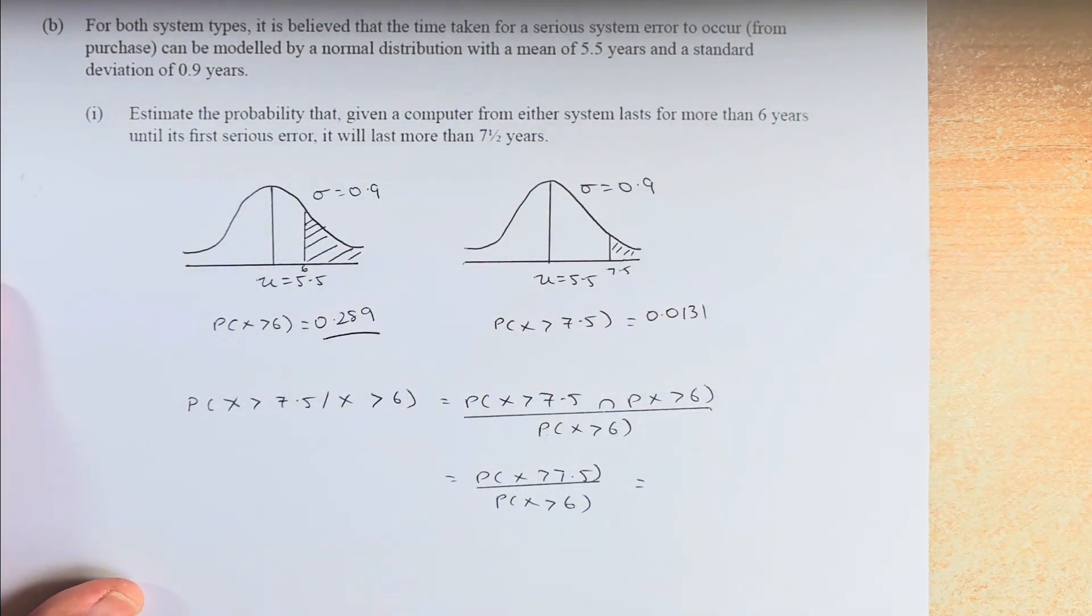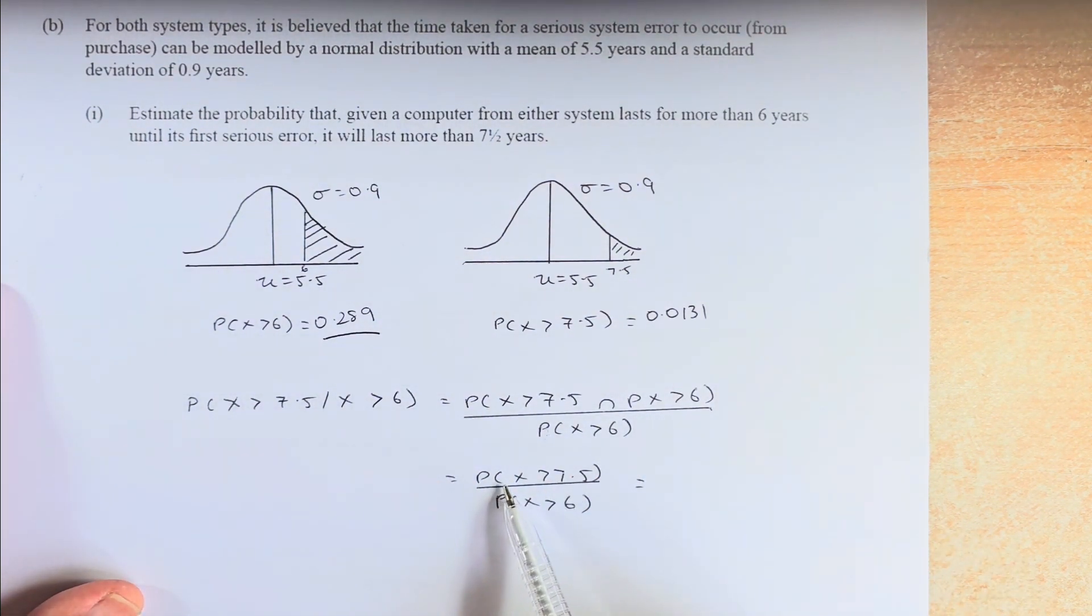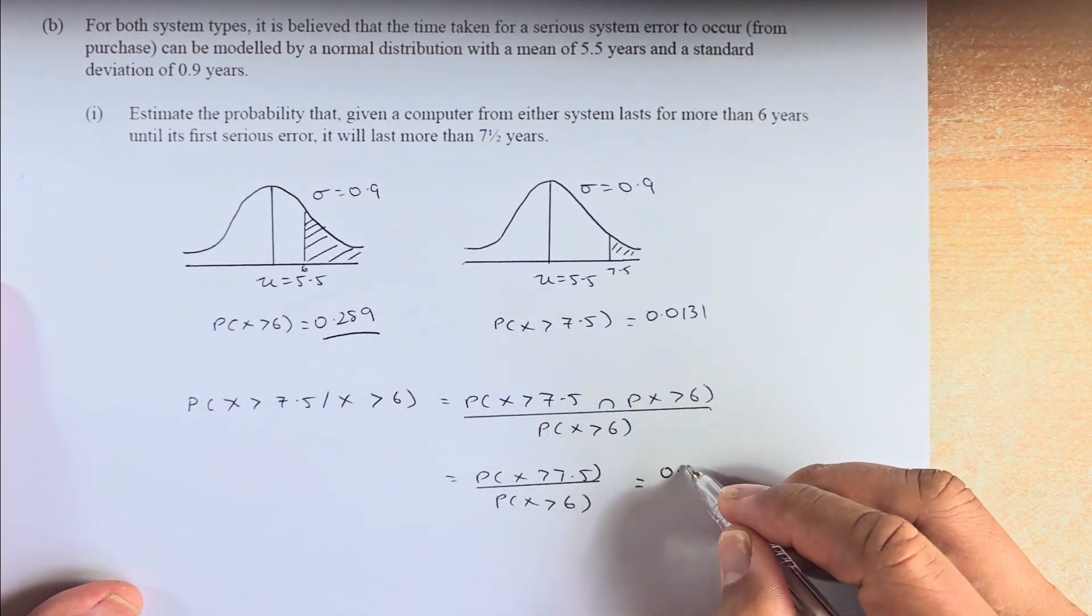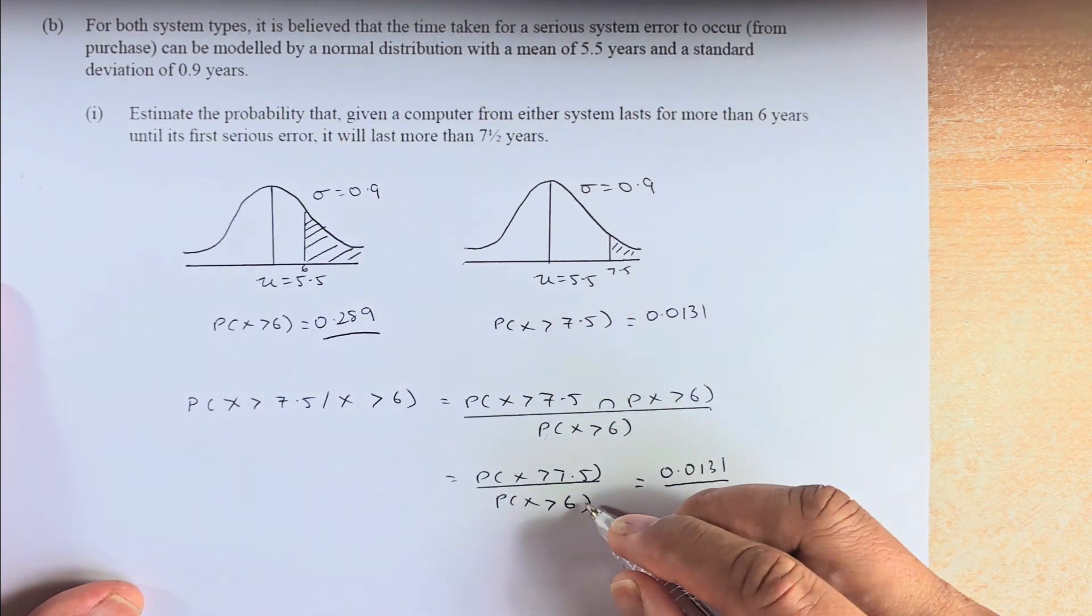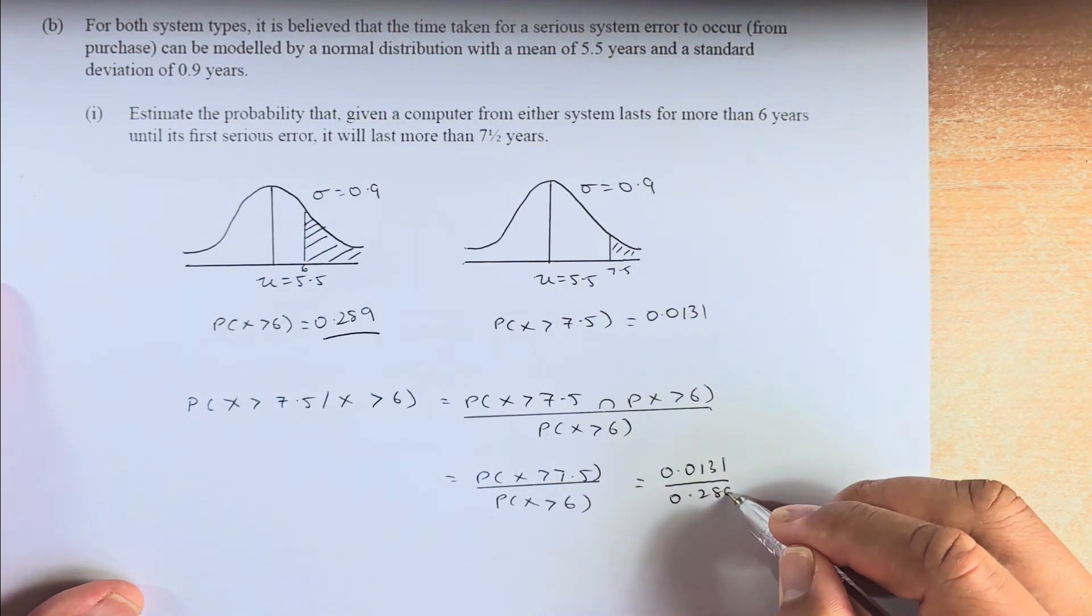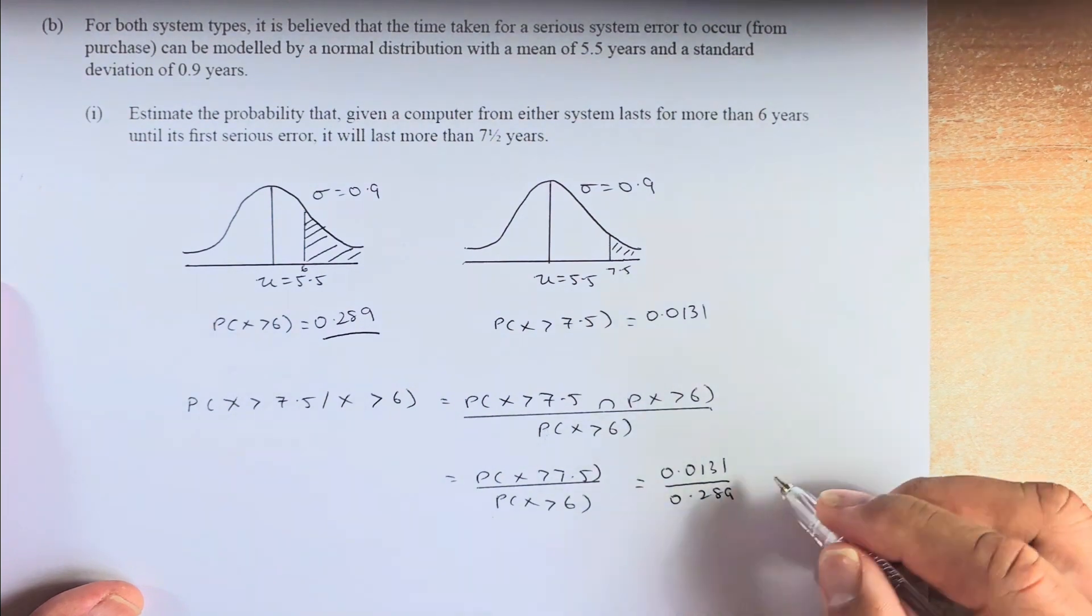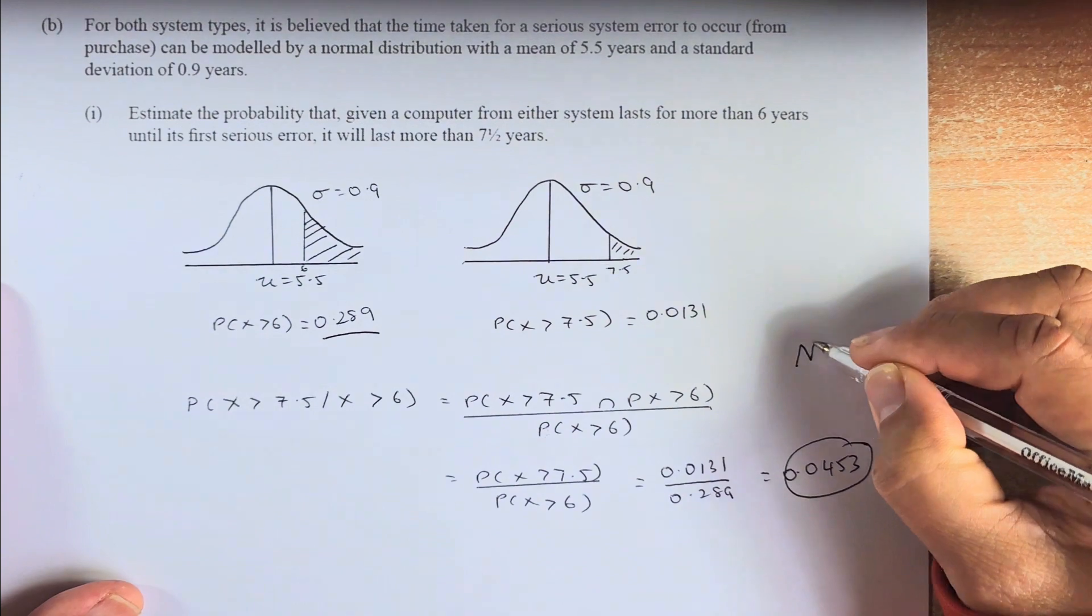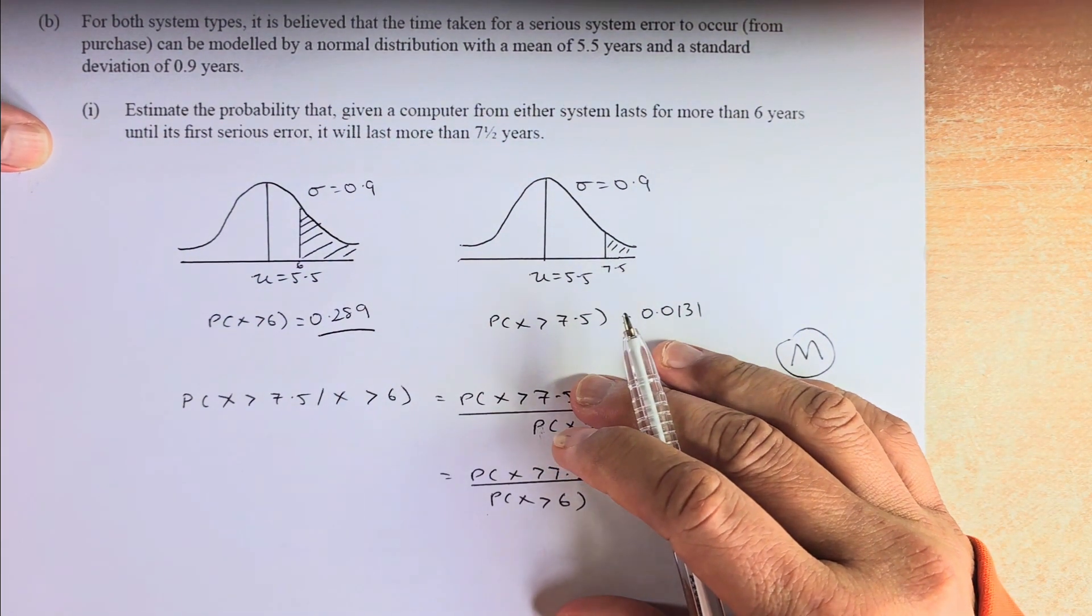So once we have that, we have already found out what is the conditional probability. We need to calculate the probability of X greater than 7.5 divided by X greater than 6. So 0.0131 divided by 0.289. I suggest you put it in the calculator and the answer is going to be 0.0453. If you get an answer, that is a merit. Got it? Great.